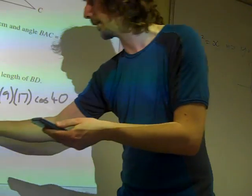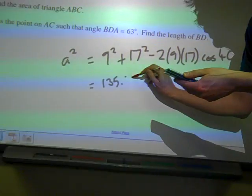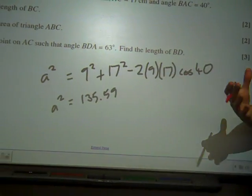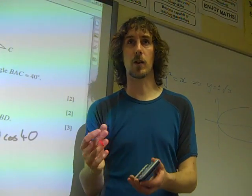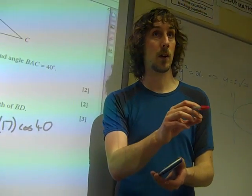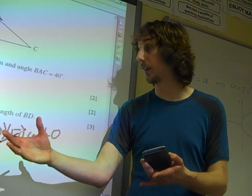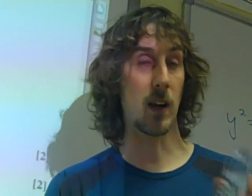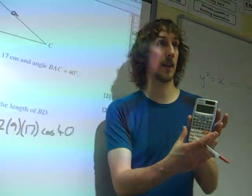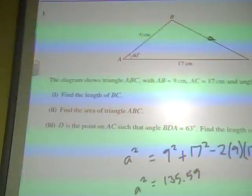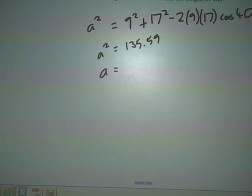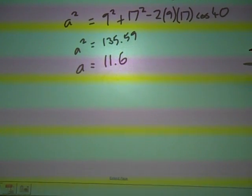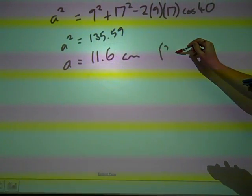If you work that out, you get a squared is 135.59 to two decimal places. But there's one point here worth bringing out — it's really easy, especially in trigonometry questions, to introduce rounding errors because you can be dealing with long decimal figures. We're going to take the square root of that — not type it back in, but use the answer on the calculator screen. So a is the square root of our answer, which is 11.6, to three significant figures.